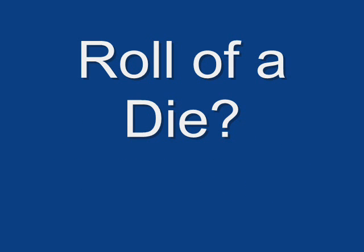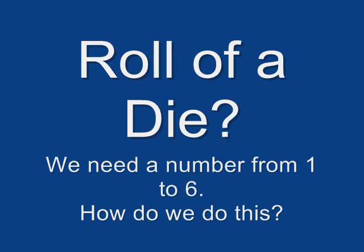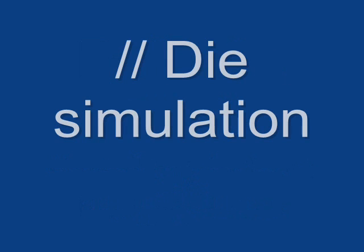I have one more example to walk you through for this mini lecture. Suppose you wanted to simulate the roll of a die, so you wanted a number between 1 and 6. If we use a scaling factor of 7, we would get a random number between 0 and 6 since Java starts counting at 0. And all of our scaling factor does is limit the upper boundary of the random number.